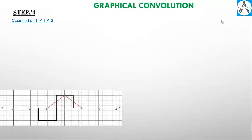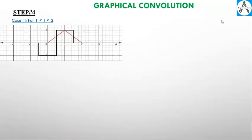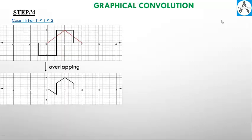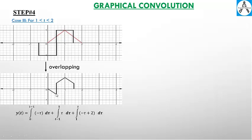Case number three: for t from one to two. After overlapping we get a composite signal that consists of three parts. Let's integrate — the first part from zero to t minus one.